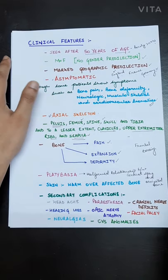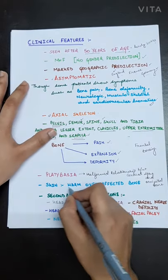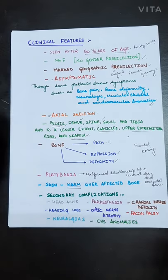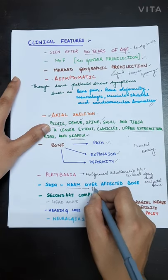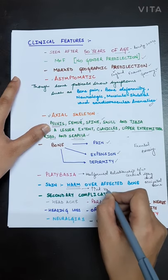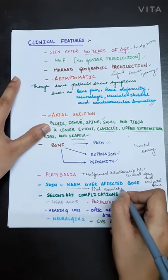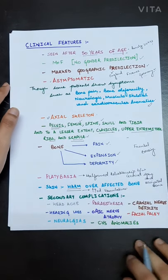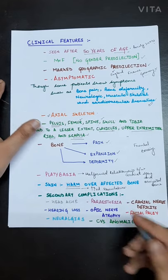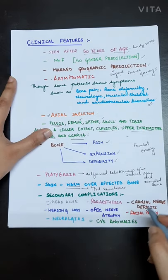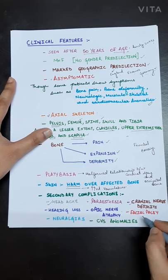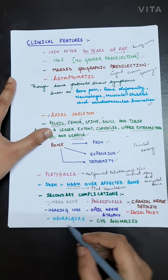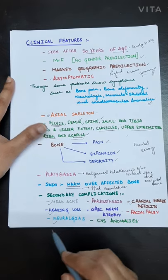The skin over the affected bone will be warm because of increased vasculature. Blood vessels will be increased in those areas. The secondary complications will be there such as headache, paresthesia, optic nerve atrophy, cranial deficits, facial palsy, CVS anomalies, neuralgias, and hearing loss.